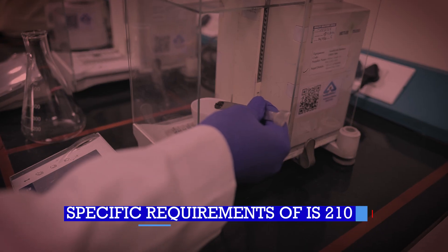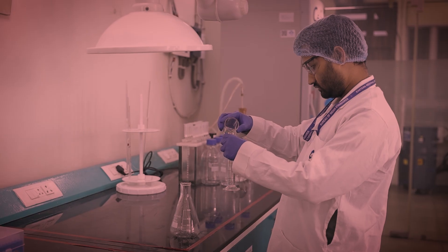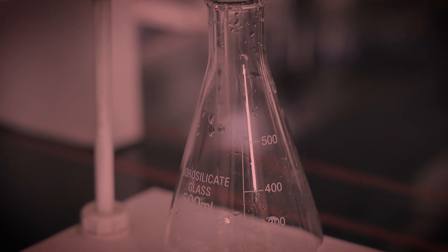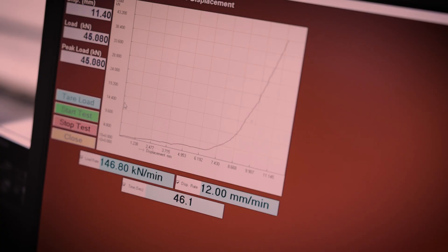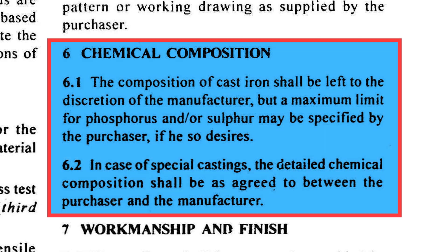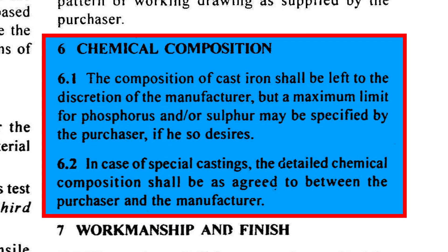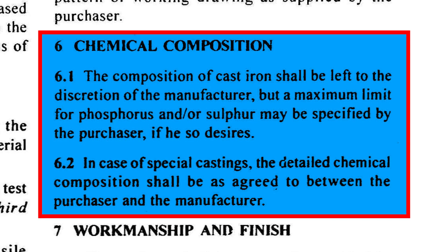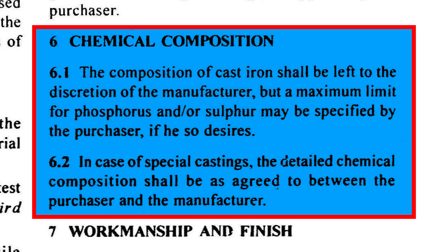Chemical composition analysis of Grey Cast Iron is crucial for ensuring the material's mechanical properties and performance. For example, carbon and silicon contribute to graphite flake formation, improving vibration damping and machinability. Accurate analysis helps meet quality standards and application requirements. The composition of cast iron is generally at the discretion of the manufacturer; however, the purchaser may specify maximum limits for phosphorus and/or sulfur depending on application requirements.